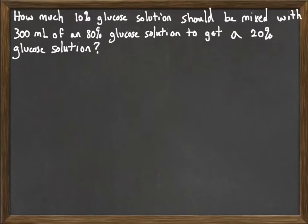And we want to know how much of that should we mix with 300 milliliters of an 80% glucose solution. So water and sugar, 80% of it's sugar, to get a 20% solution.